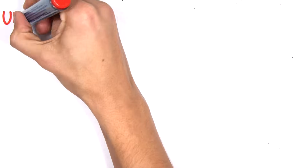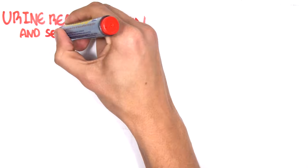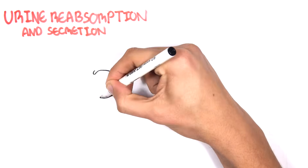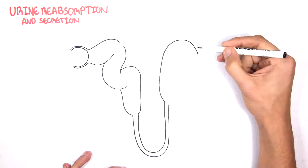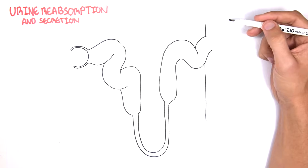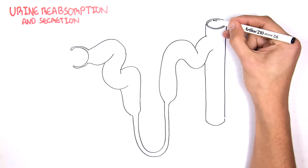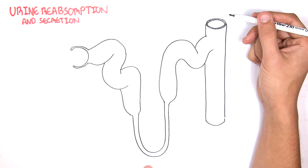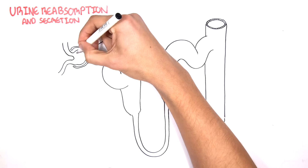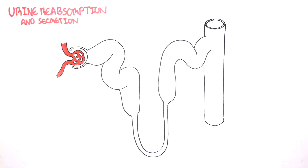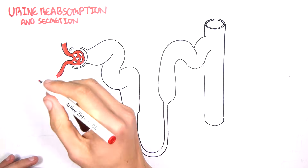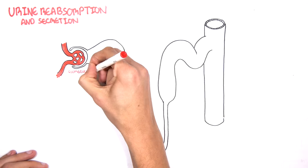The kidneys are very important organs. The functional units of the kidneys are the nephrons, and we have millions of these in each kidney. The nephrons are important in forming urine, and there are four main steps in urine formation: filtration, reabsorption, secretion, and excretion. In this video we will focus mainly on reabsorption and secretion.